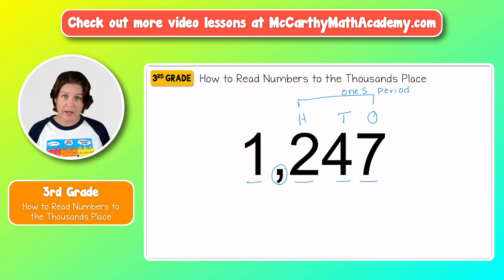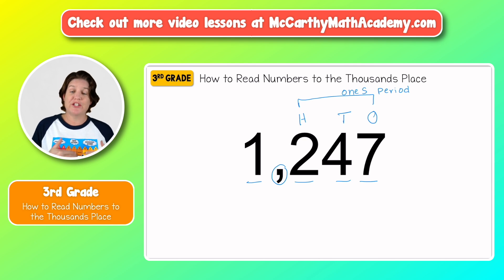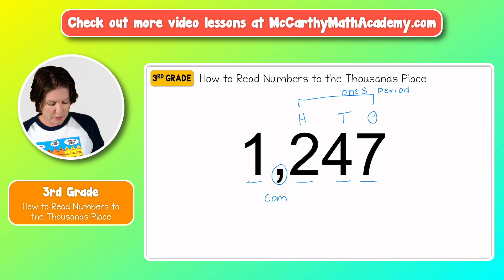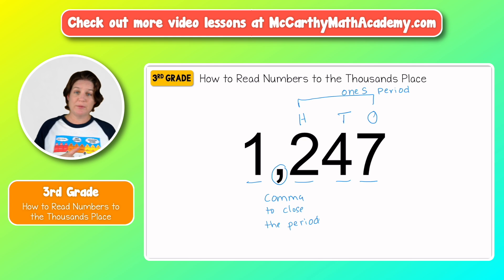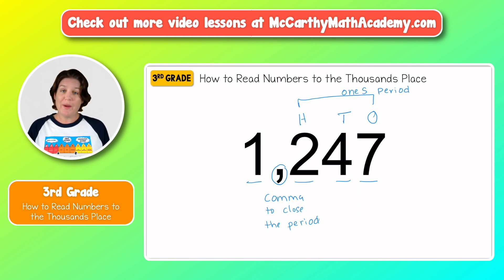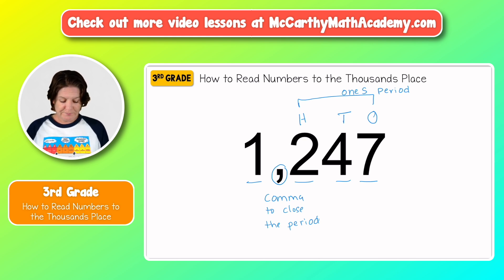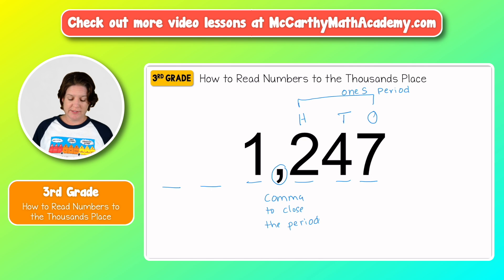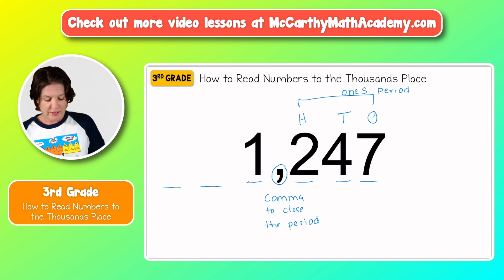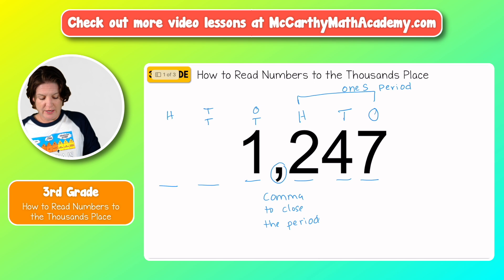Right here we've got a comma. The comma closes the period that you're leaving when you read it — meaning it's letting you know that we're leaving the period that's actually to our left. So after three digits, we put a comma because we're entering into a new period. Right here we have the digit one, and this one is also grouped with two other places — three places total. We've got the thousands place, the ten-thousands place, and the hundred-thousands place.